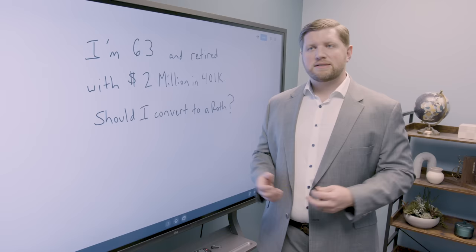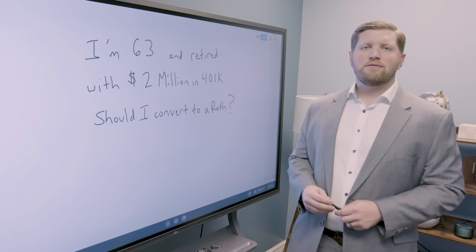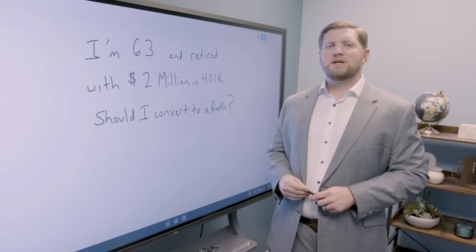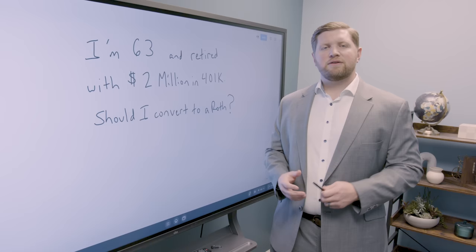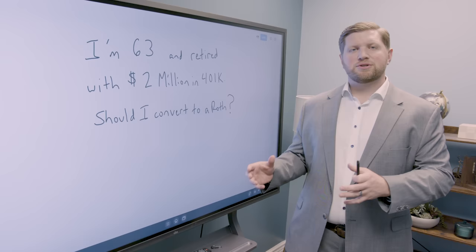So we've got a 63-year-old who is retired. They have accumulated a pretty large sum in their 401ks, $2 million. And so we're going to look at the details of this situation to see if now is a good time for them to start converting this money from the 401k or tax-deferred position into a Roth position where it can, from this point forward, grow tax-free.